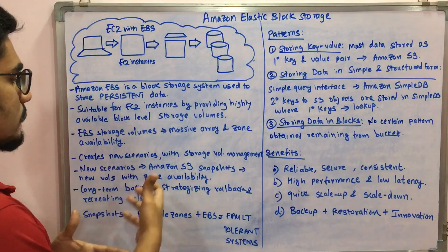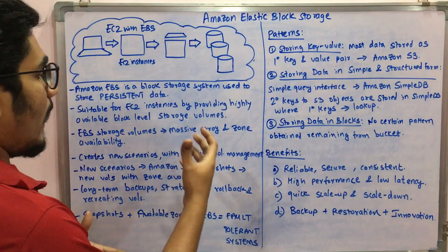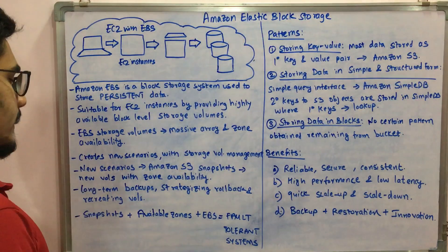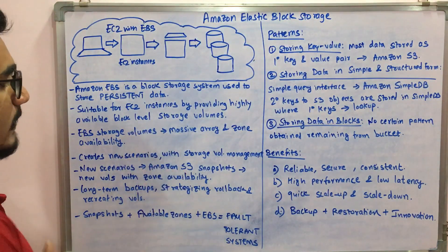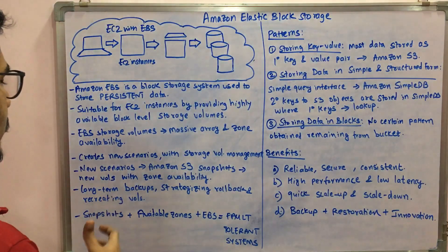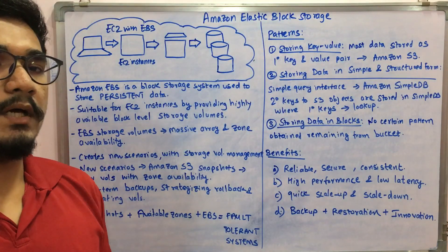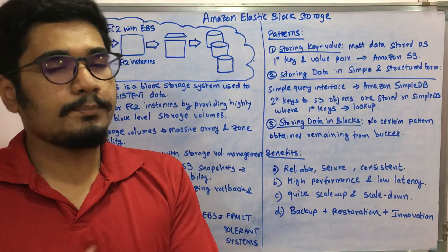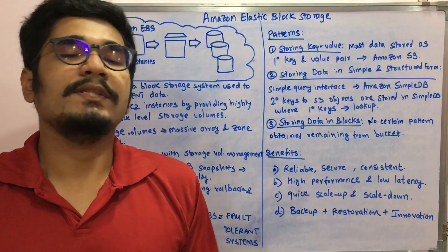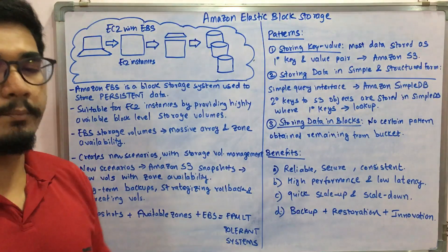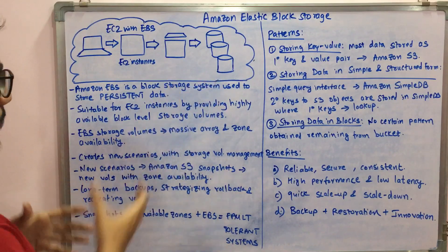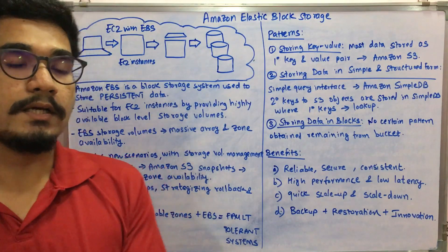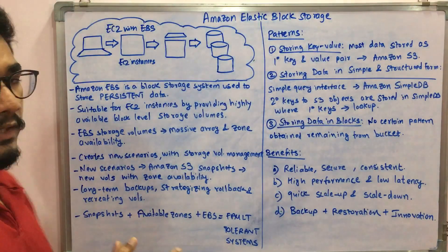Creating new storage volume scenarios gives rise to Amazon S3, the Simple Storage System. This enables snapshots and new volumes with zone availability, providing benefits of long-term backups, strategizing rollbacks on your datasets, and recreating volumes that went down due to some disaster. Combining S3 snapshots, availability zones, and EBS together allows you to build a fault-tolerant cloud system — that is the key benefit of EBS.